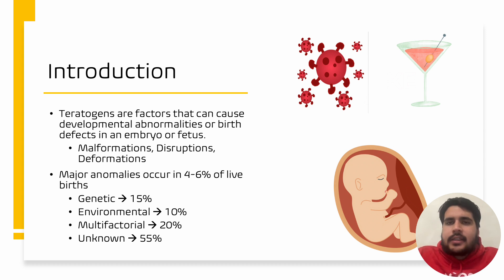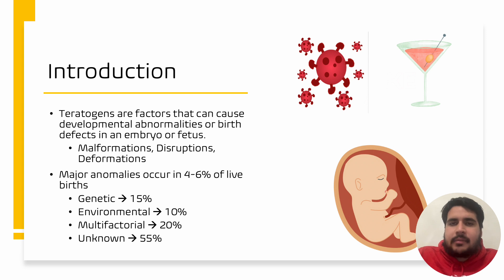To give you just some hard numbers or statistics, major anomalies or abnormalities occur in approximately 5% of all live births. 15% of these major anomalies can be attributed to genetic defects. 10% can approximately be associated with environmental agents. And 20% can be associated with both a combination of genetic and environmental agents. And lastly, 55% of all of these major anomalies have an unknown cause.